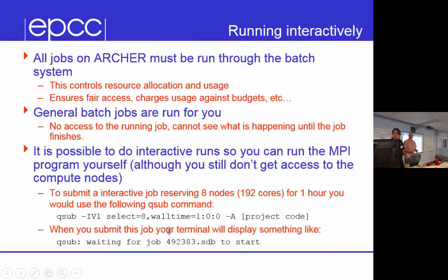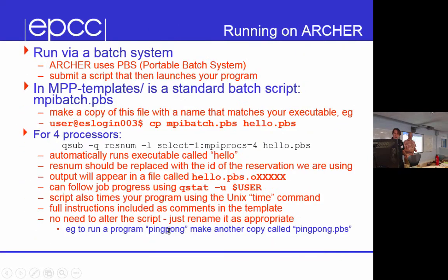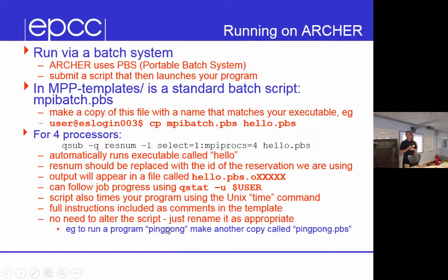I guess just to leave up this slide, because this is the one which... As Adrian said, we have a magic batch script. If you've been on the course for the past couple of days, you're pretty able to use your own. But it's called MPI batch, and you just need to copy it. So if your program is called Hello, just make a copy of it called Hello.pbs. If your program is called Goodbye, you make a copy of it called Goodbye.pbs. And if it's called Goodbye.pbs, it knows to run a program called Goodbye, just magically. And you just submit it like that.